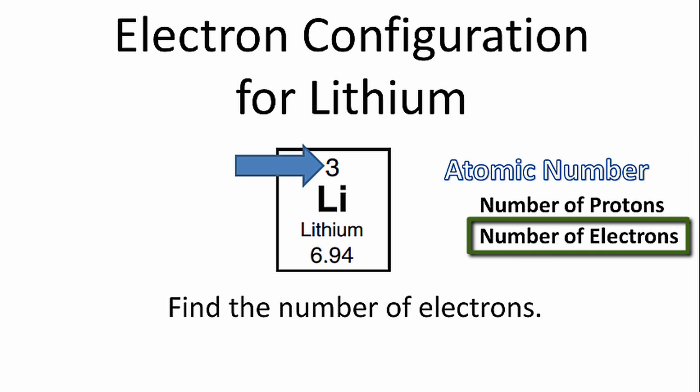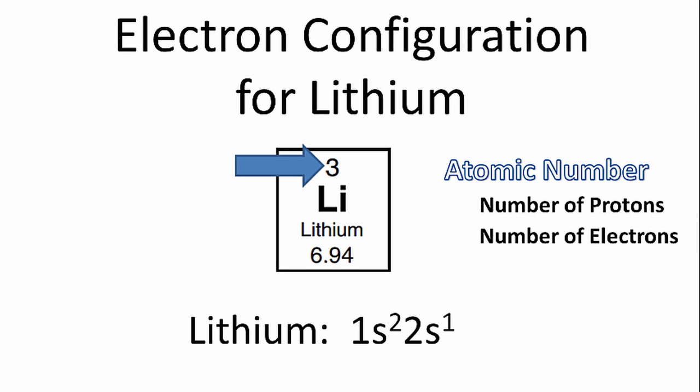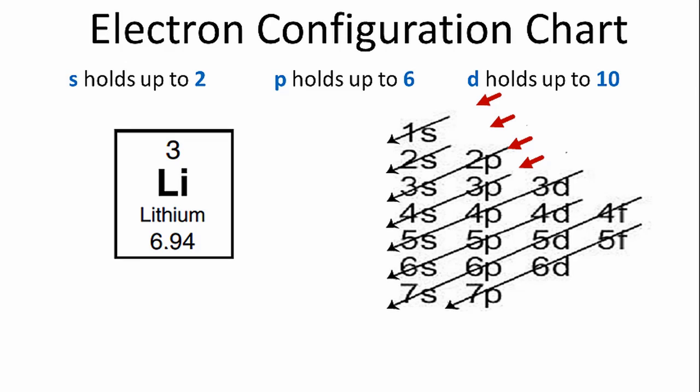We can use that number to write the electron configuration for lithium. We'll use the chart on the right to place the three electrons for the lithium atom around the nucleus. So we'll start with the table and go down the 1s row.